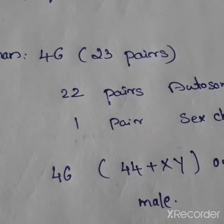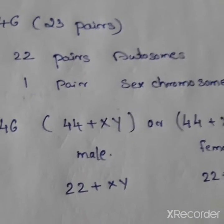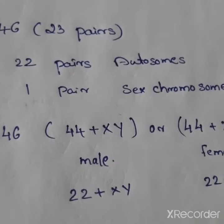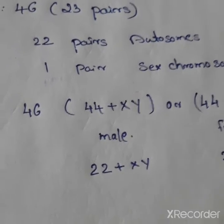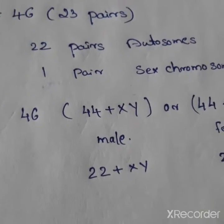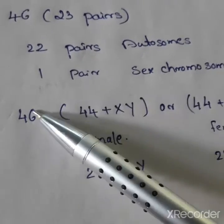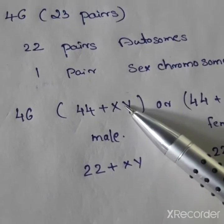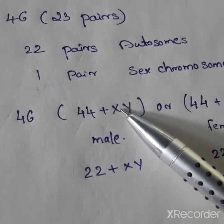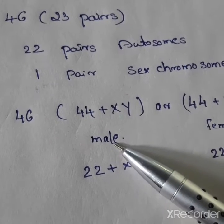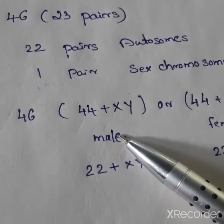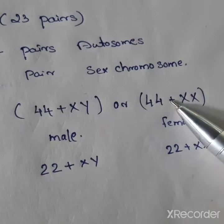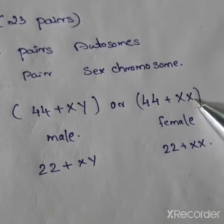Out of 23 pairs, 22 pairs are autosomes and one pair are sex chromosomes. In total: 46 chromosomes — 44 autosomes and 1X and 1Y in case of males; and 44 autosomes and 2X chromosomes in case of females.